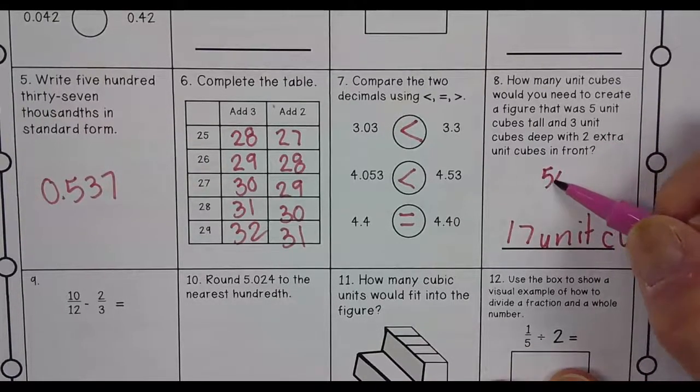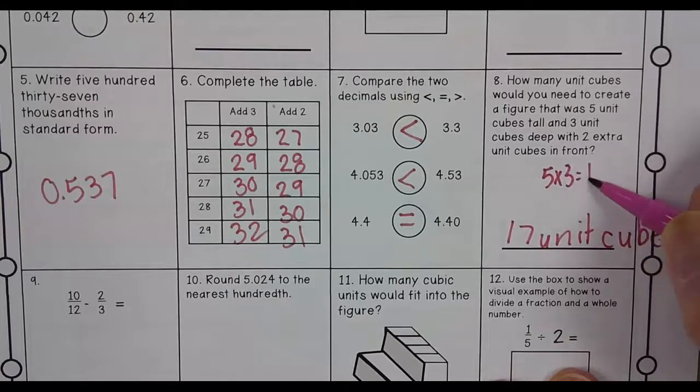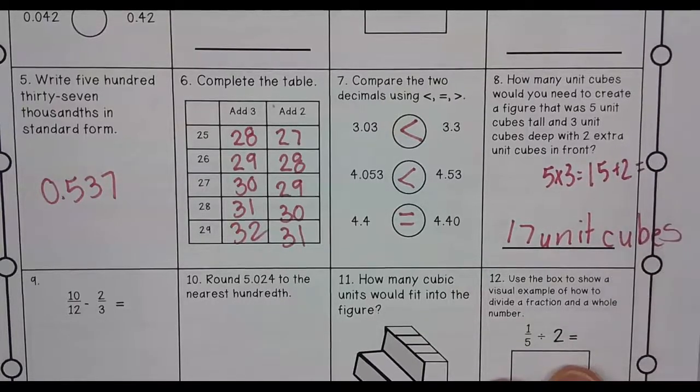So 5 times 3, which is 15 plus 2, which is 17. Beautiful.